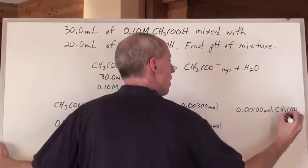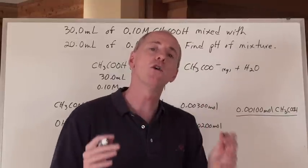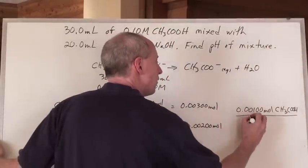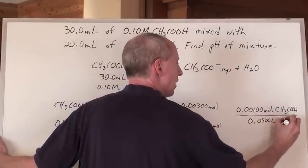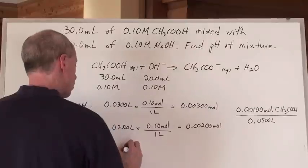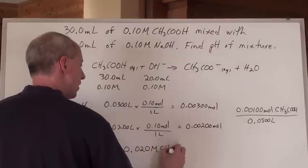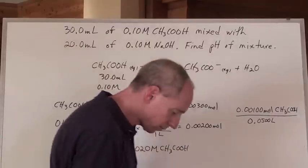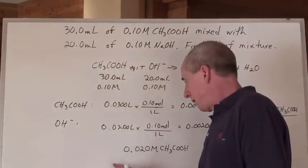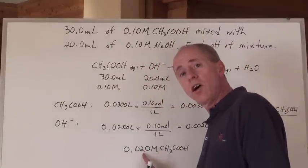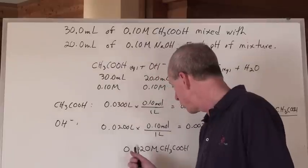Now you're saying: I know that the concentration of the acetic acid left over in excess is going to be that divided by the new volume of the solution, which is 50 milliliters — the 30 and the 20 combined. When I do that, I'm going to get a concentration of 0.020 moles per liter of acetic acid. And you're going to say: hey, I can calculate the pH of a weak acid — the pH would equal the square root of Ka times this concentration, take the negative log, and you get the pH.